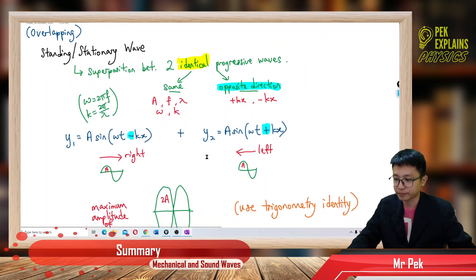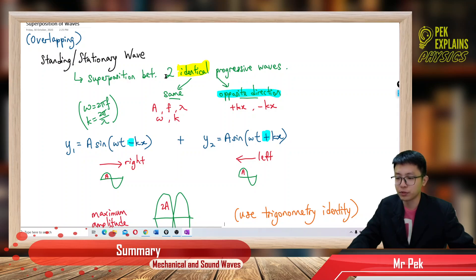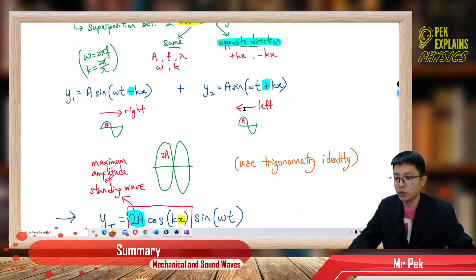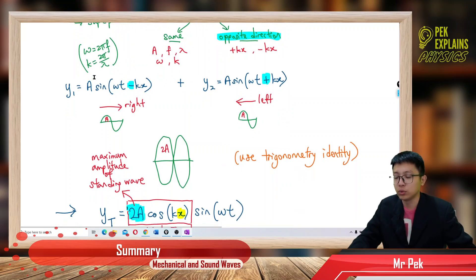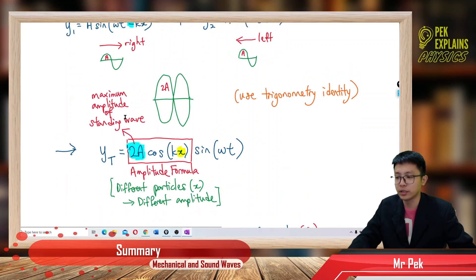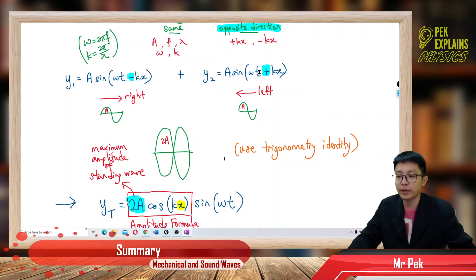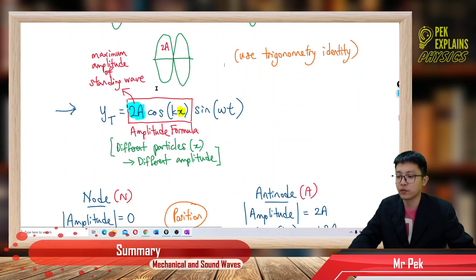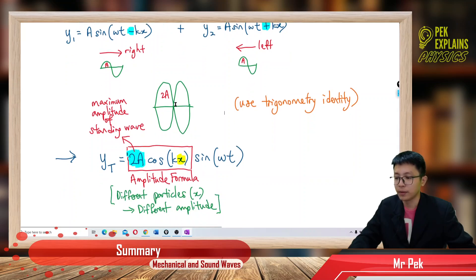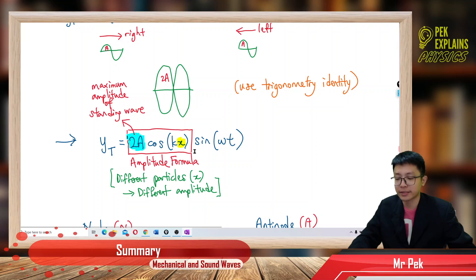Back to our subject. Stationary wave happens when there's superposition between two identical progressive waves traveling in opposite direction. These two waves add up, and we get a stationary wave. So y1 and y2 added together, we get a stationary wave equation. The equation for the stationary wave is: y total equals two amplitude cos kx sine omega t.